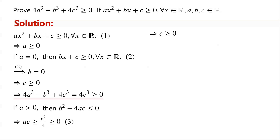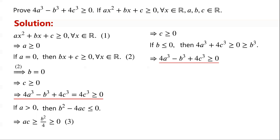Next we consider two cases: b is less than or equal to zero, or b is greater than zero. If b is less than or equal to zero, then 4a cubed plus 4c cubed must be greater than or equal to zero, which is greater than or equal to b cubed. Rearranging the inequality, we have 4a cubed minus b cubed plus 4c cubed is greater than or equal to zero. So the inequality holds when b is less than or equal to zero.